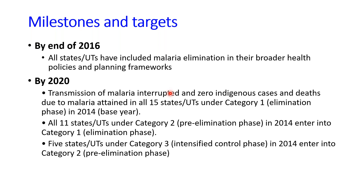The framework was introduced in a phased manner. By end of 2016, all states and union territories had included malaria elimination in their work, policies, and planning frameworks. The target for 2020 was that transmission of malaria be interrupted and zero indigenous cases achieved in all 15 states/UTs under Category 1, which is the elimination phase. Additionally, 11 states/UTs in Category 2 were to enter Category 1, and five states under Category 3 were to enter Category 2 by 2020.